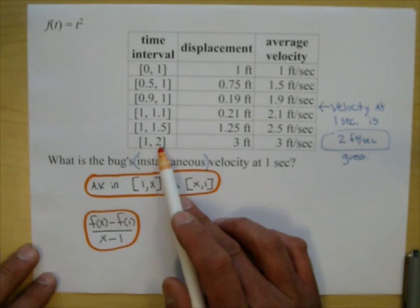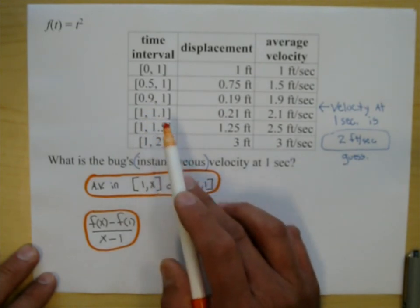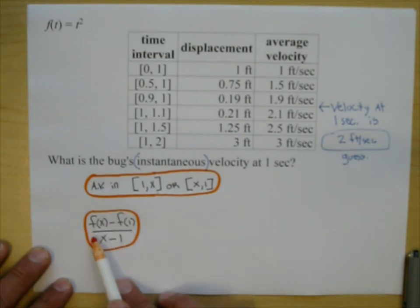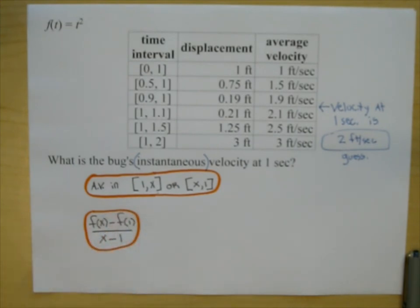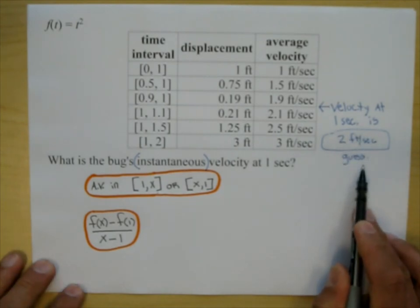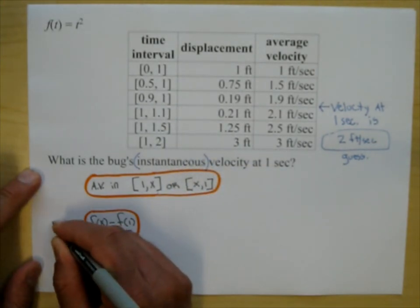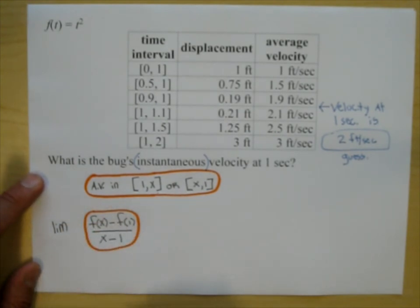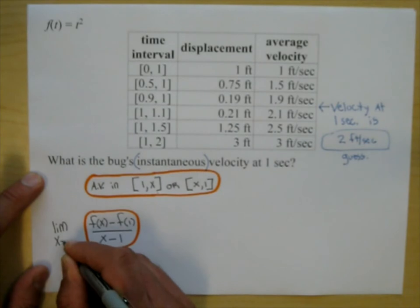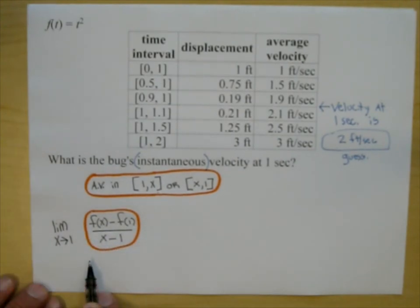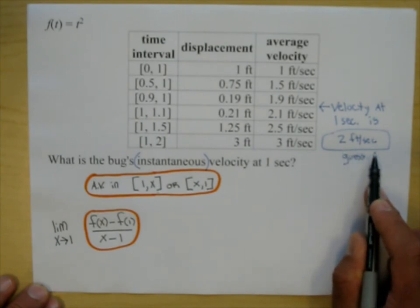x could be 2, or 1.5, or 1.1, or 0.9 — we could use this calculation to get all those average velocities. But remember how we were making the time intervals smaller and smaller? We can take the limit as x approaches 1. As the time interval keeps getting smaller, we make x approach 1. This right here will get you the instantaneous velocity.